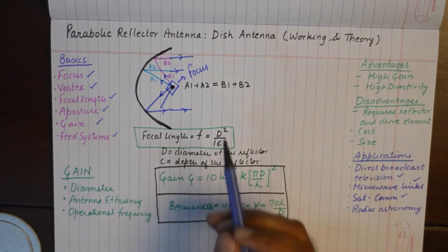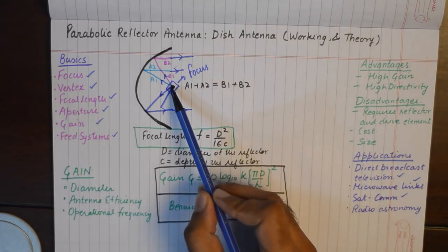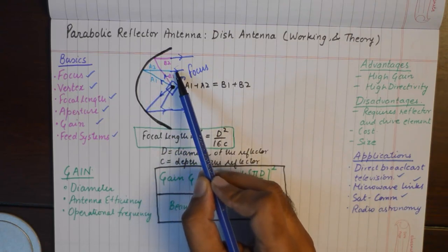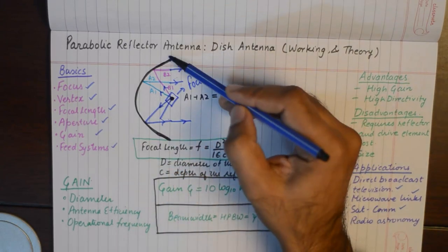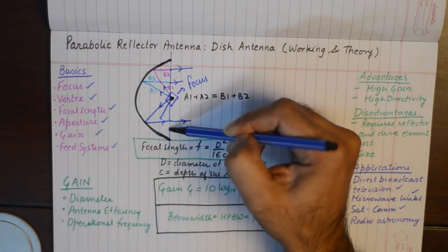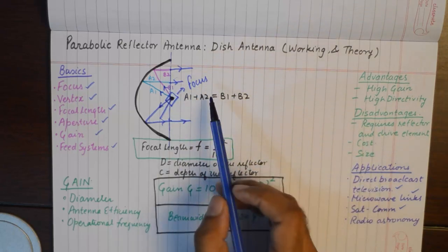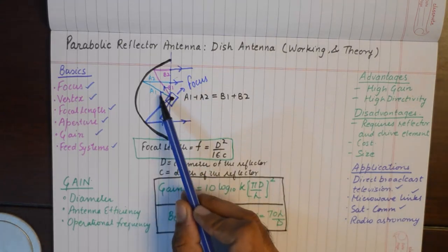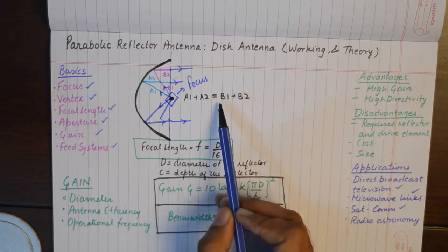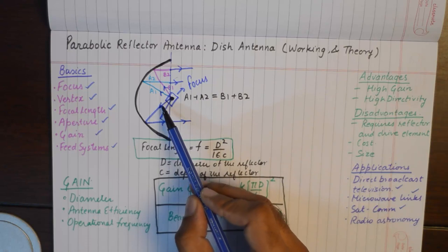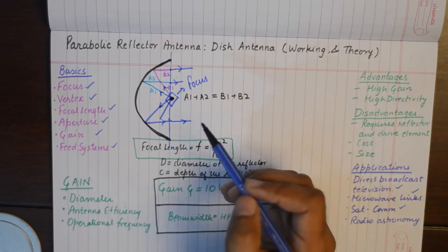Whenever a wave touches the parabolic antenna and reaches the face, the distance covered by the wave is going to be the same.